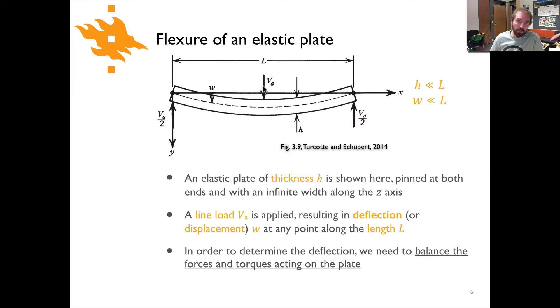This line load VA in the middle results in a deflection, and the deflection is noted with the letter W. The displacement or deflection is going to vary as you go along the length of the plate. At this point here you can see the arrow showing W, but if you were to go further over, the deflection would be larger. This is showing you the deflection from the y equals 0 to the center of the beam.